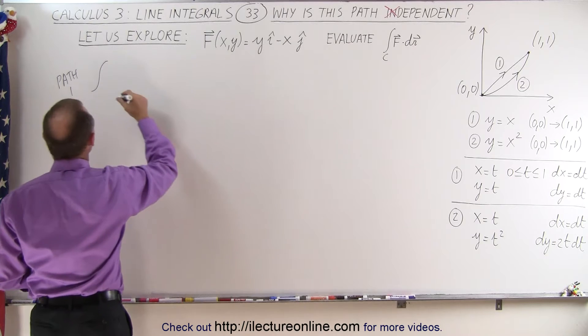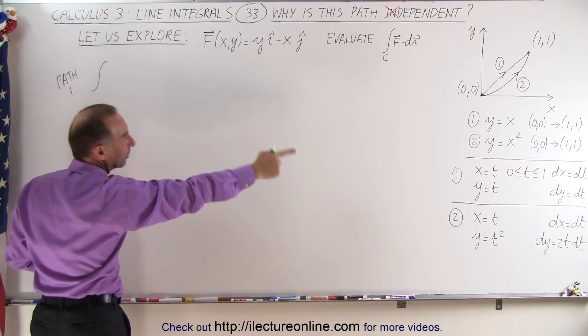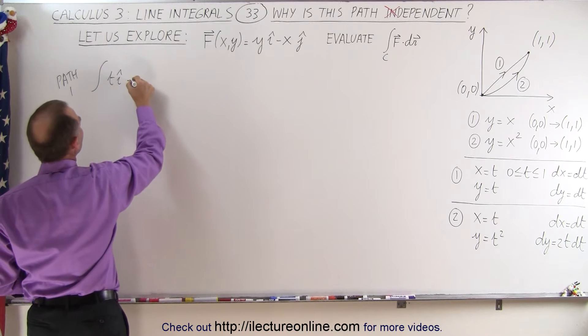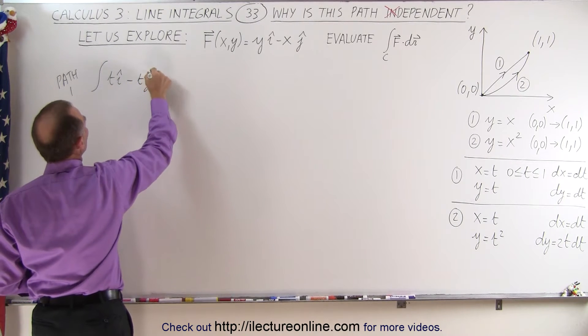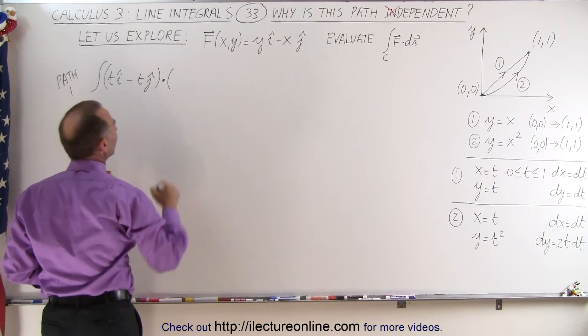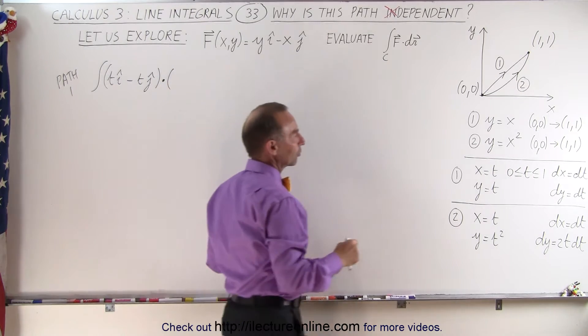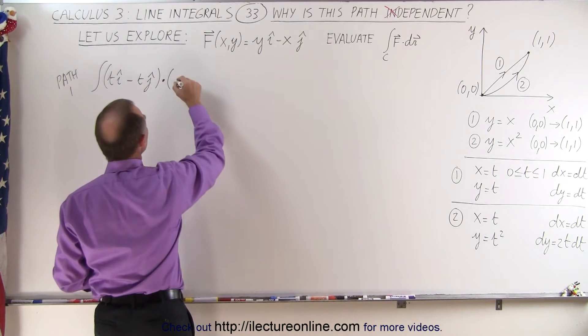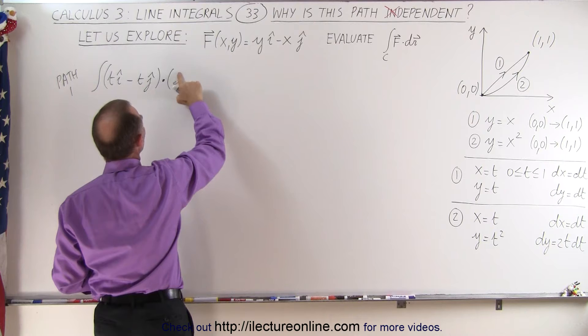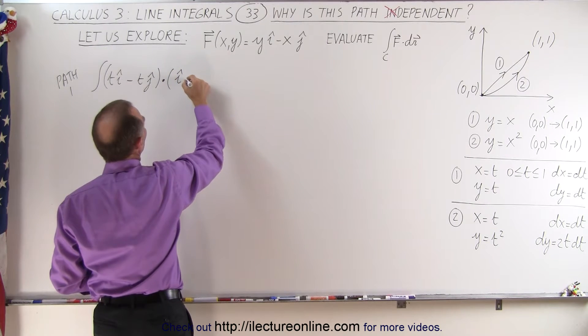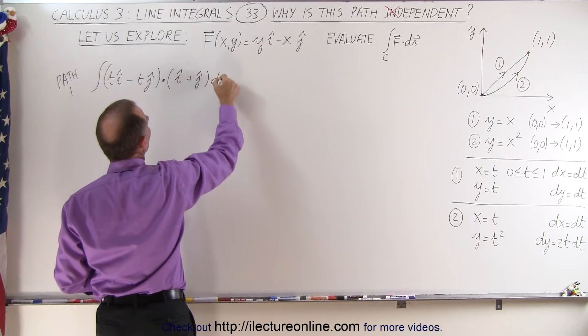So the function now becomes as follows: y is equal to t, so we get t in the i direction minus t in the j direction, and we're going to do the dot product with dr. dr is going to consist of dx and dy in the i and the j direction, convert to dt, so this becomes, we're going to factor out a dt so that would be i plus j times dt.